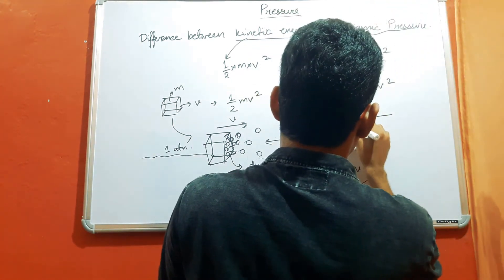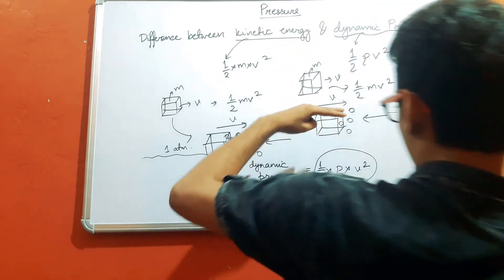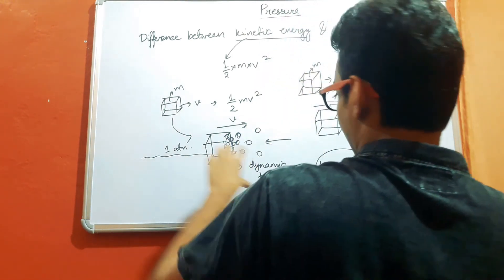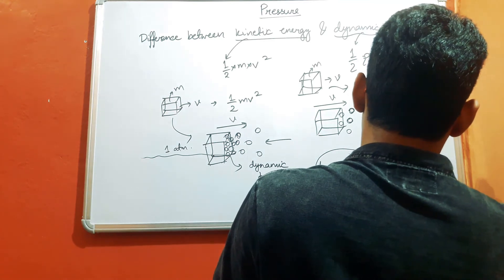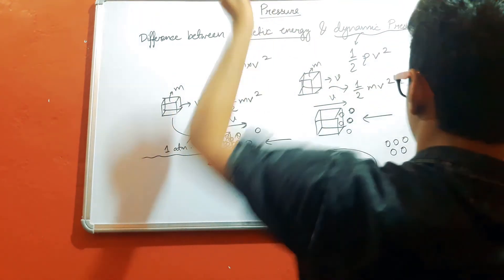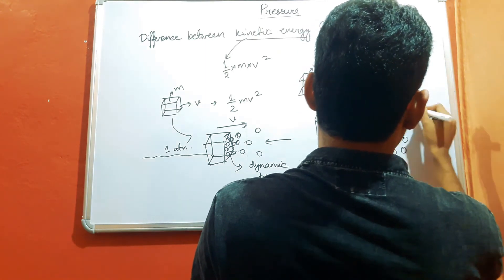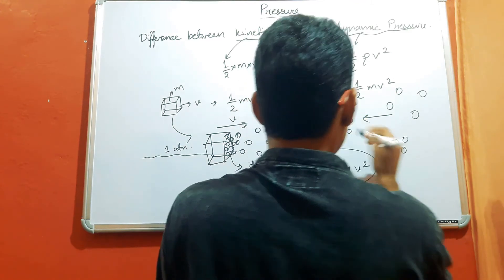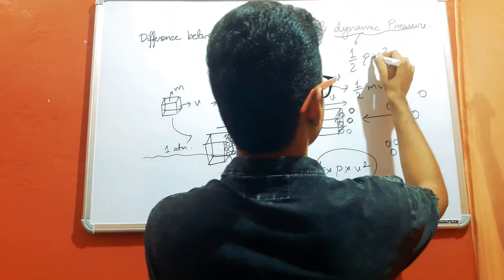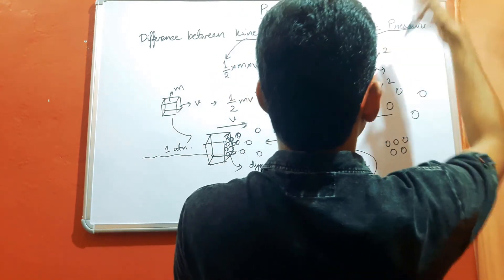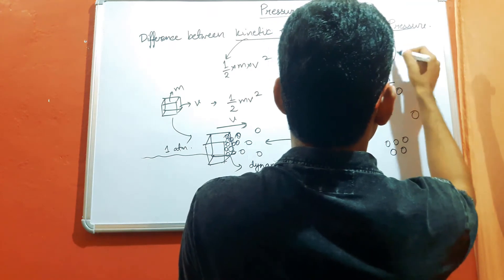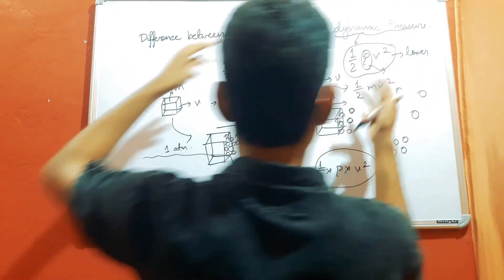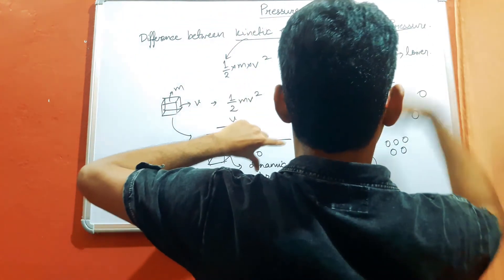But due to the gain in altitude, now these molecules are basically separated from each other. At the surface of the earth the molecules are closer, but at higher altitude these molecules are farther apart, due to which a smaller number of molecules are going to hit this particle from this direction because of the lesser density of air at higher altitude, and as a result the dynamic pressure is lower at higher altitude.